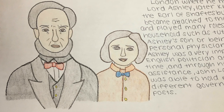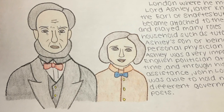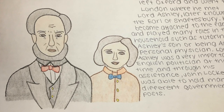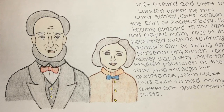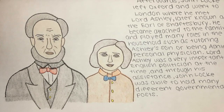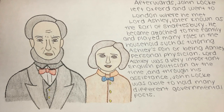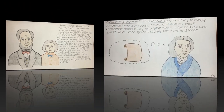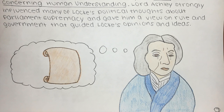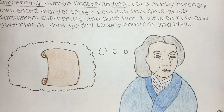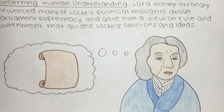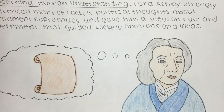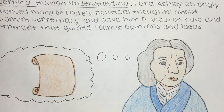Afterwards, John Locke left Oxford and went to London, where he met Lord Ashley, later known as the Earl of Shaftesbury. He became attached to the family and played many roles in the household, such as tutoring Ashley's son or being Ashley's personal physician. Lord Ashley was a very important English politician at the time, and through his assistance, John Locke was able to hold many different governmental posts. During this period, Locke began a project that later became one of his most famous works, the Essay Concerning Human Understanding. Lord Ashley strongly influenced many of Locke's political thoughts about Parliamentary Supremacy and gave him a view on rule and government that guided Locke's opinions and ideas.